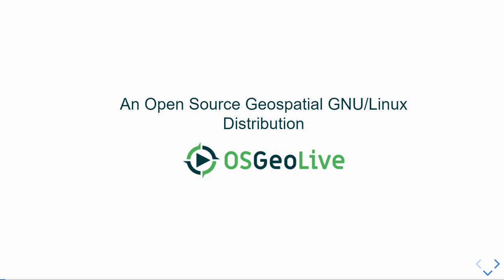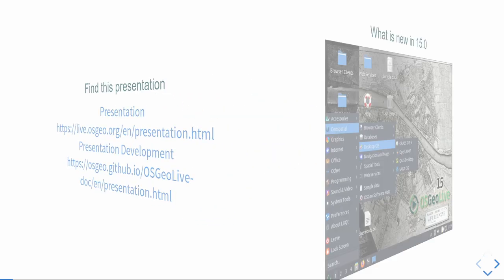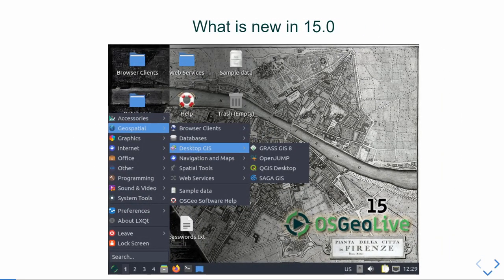OSGeo Live is an open source geospatial Linux distribution. We publish it every year, trying to release it just before FOSS4G. You can always recognize the version from the desktop image, and we try to use a background connected to the event. Here we have an old map from Florence, and you can see it's version 15, our current version.